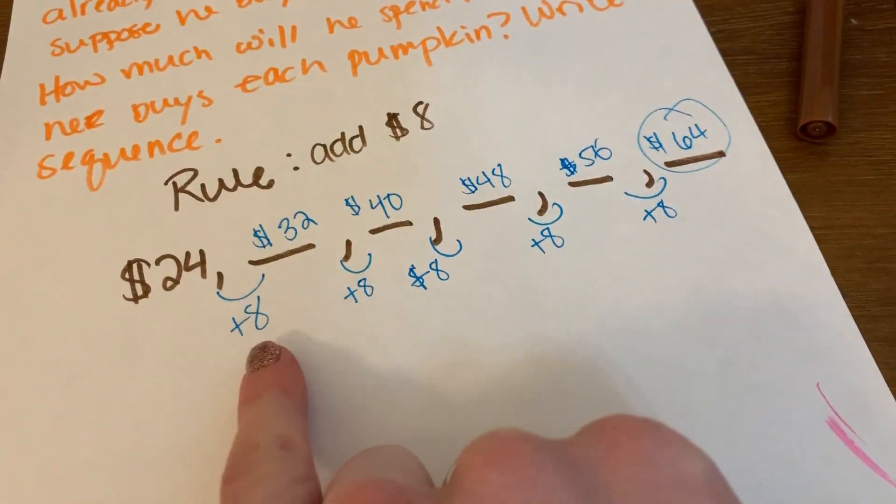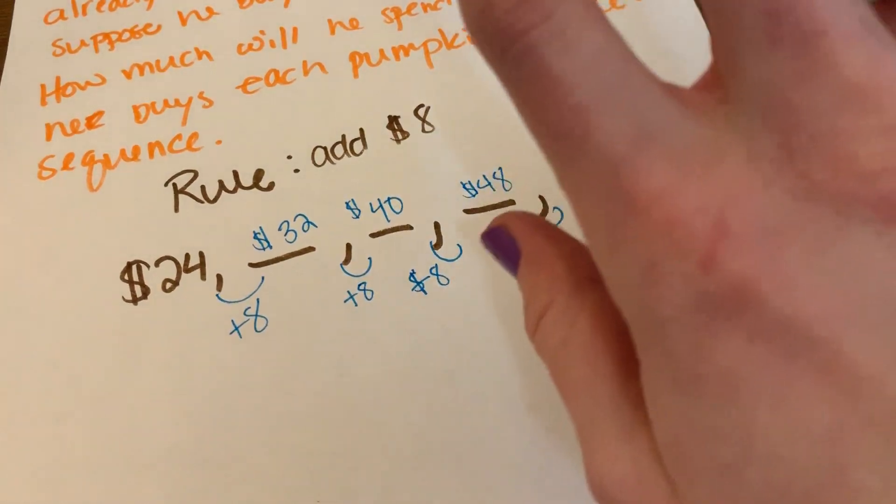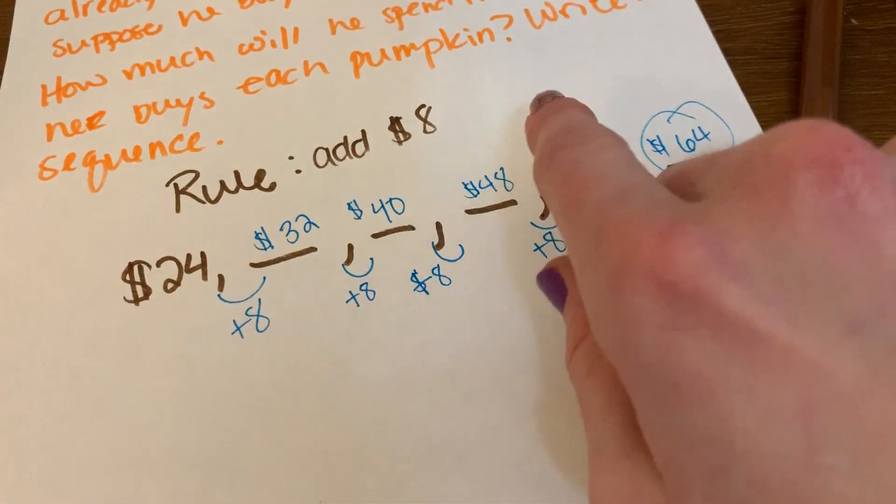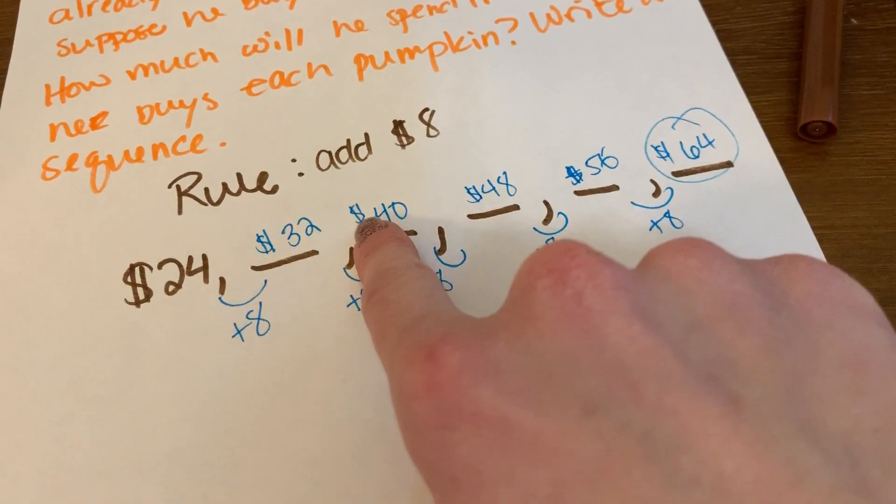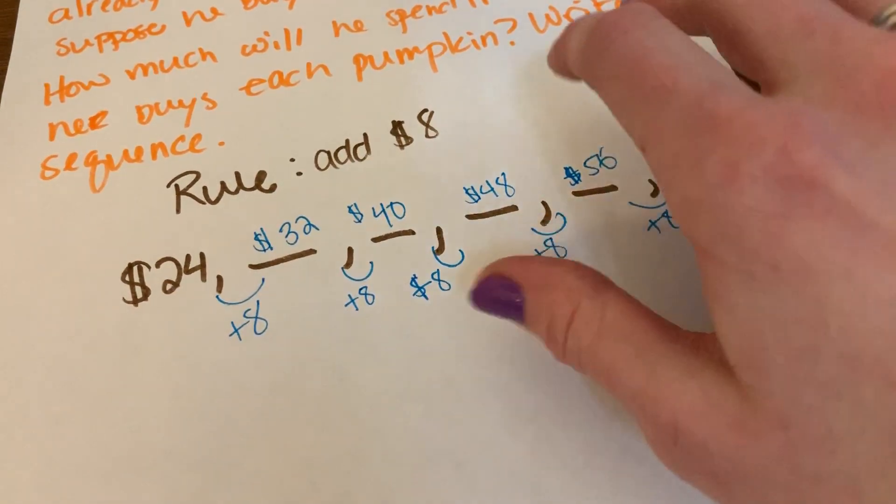So what I observe about this pattern, or I'm sorry, this sequence, is that we're actually just multiplying by 8. So one more group of 8, one more group of 8, one more group of 8. These are all multiples of 8.